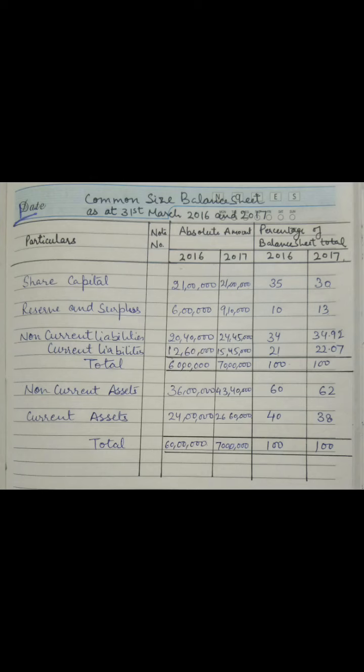One more thing: whether making a comparative or a common size balance sheet, in both cases the first column should be for the previous year and the next column for the current year. This makes calculations more convenient and easy for students, with no chance of incorrect answers. I would suggest you write the details with the previous year first and the current year next, as I have done in all my questions.